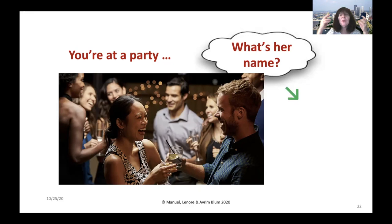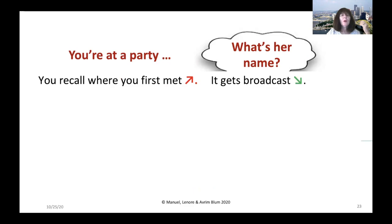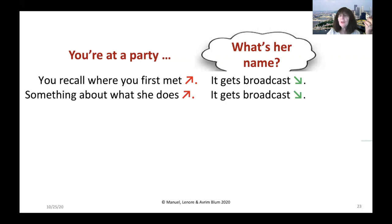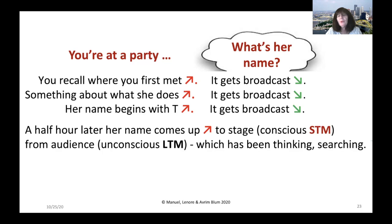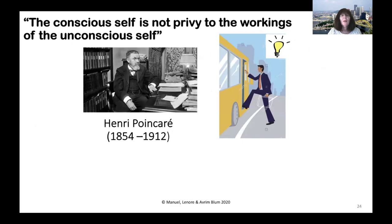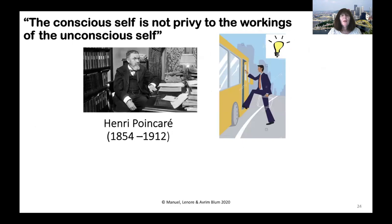What's happening is the query 'what's her name?' gets broadcast down to all unconscious processors. One processor recalls where you first met — in a computer science class — which goes up to short-term memory and broadcasts down again. Another processor remembers she's in machine learning, then her name starts with a T, and so on. About a half hour later, her name comes up to the conscious stage from the audience of unconscious long-term memory processors that have been searching. The conscious self doesn't know quite how or where her name was found.